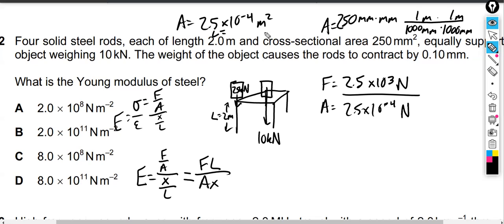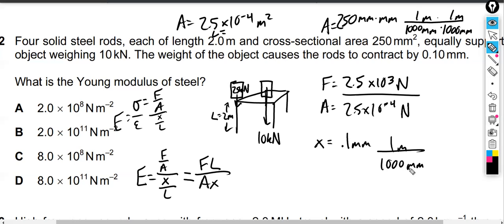The extension is given, but we need to do the same kind of conversion — converting 0.1 millimeters into meters. The extension is 0.1 millimeters, and there are 1,000 millimeters in one meter, so we divide by 10 to the positive 3. You could also think of it as 10 to the negative 3 meters per millimeter, but I prefer to work with positive exponents in the denominator. The millimeters cancel and we get 1 times 10 to the negative 4 meters — that's the extension.